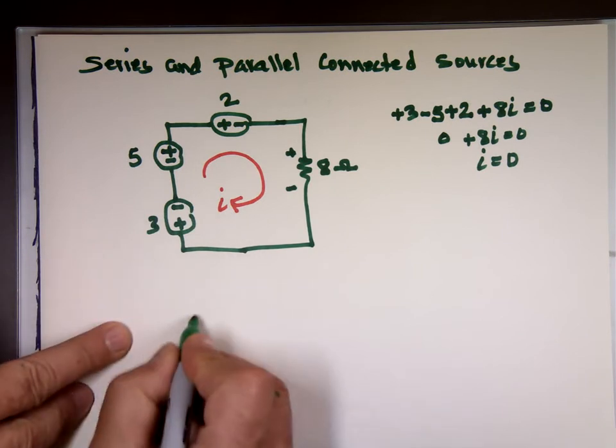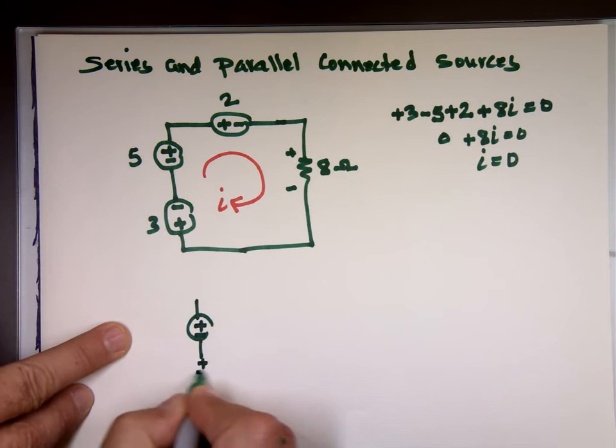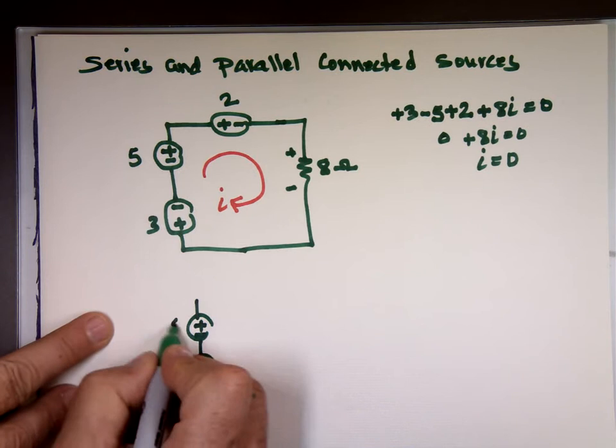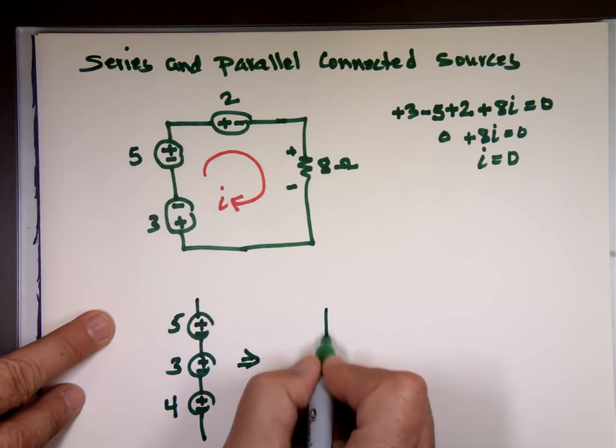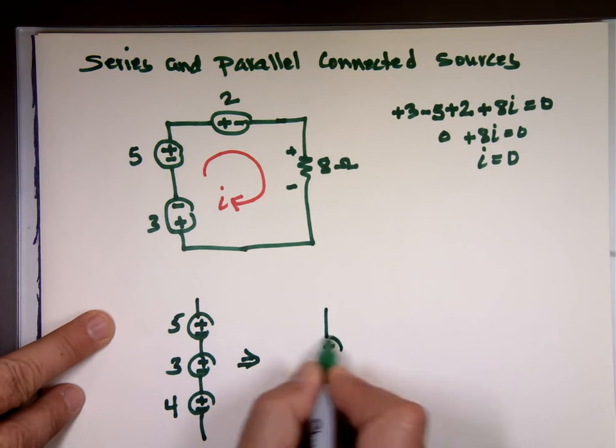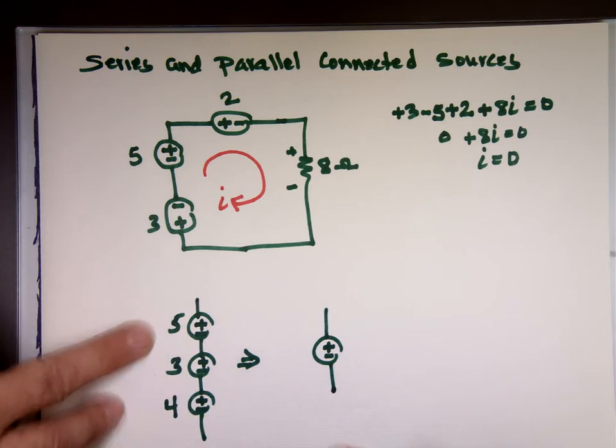So when you have sources connected like this, in the same direction, 5, 3, 4, you can replace these with one source since they all go in the same direction. And what's the value? What's 4 plus 3 plus 5? 12 volts.